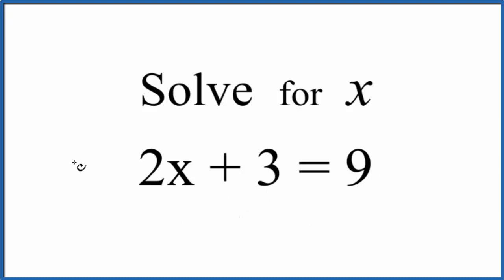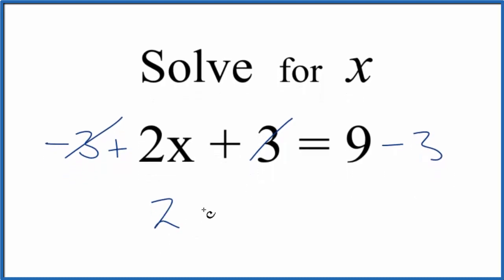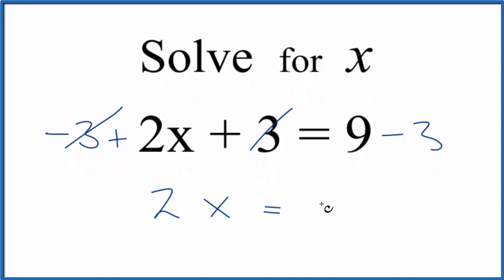If we subtract 3 from both sides, so we add a negative 3 to both sides, that'll get rid of the 3. So now we have 2x equals 9 minus 3, which is 6. As long as we do the same thing to both sides, we're okay here.